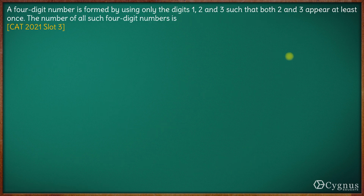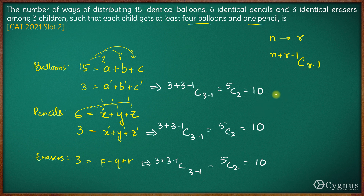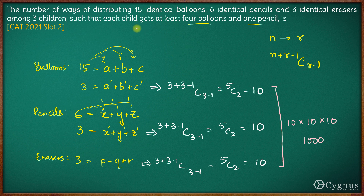So the total number of ways of distributing balloons, pencils and erasers will be 10 for balloons into 10 for pencils into 10 for erasers. So this comes out to be 1000. Hence the answer to this question is 1000 — total number of ways of distribution is 1000. That is it for this question.